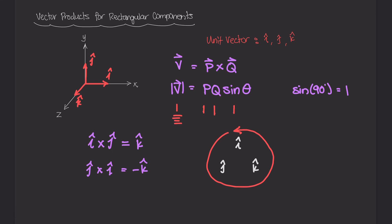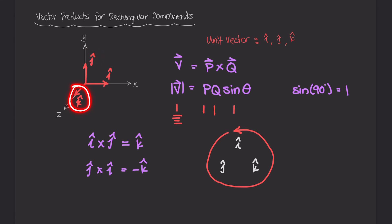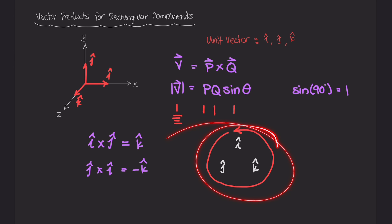There's one important note: what if we took i cross i, j cross j, or k cross k? The angle between those two identical vectors is zero, and sine of zero is zero, so i cross i, j cross j, and k cross k all equal zero. For all other cross products like i cross j or j cross k, you can use the circular diagram to figure out the direction of the resulting cross product vector.